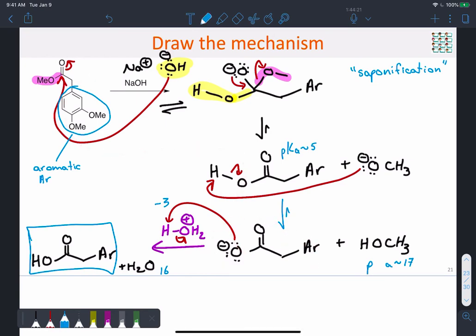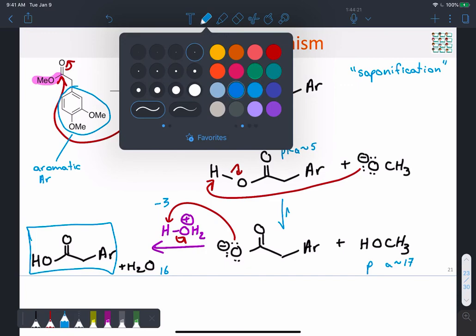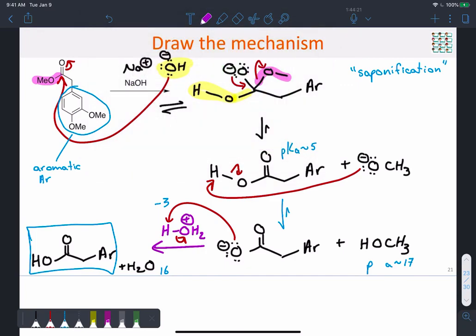In a second or separate step of the reaction, we would add in acid like hydrochloric acid dissolved in water. That's what would give us the neutral final product that we could isolate.